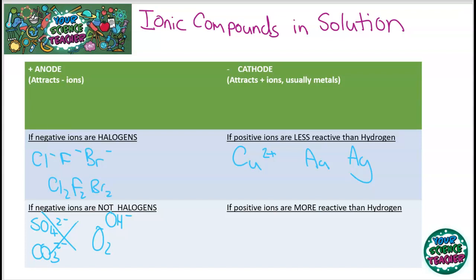However, if you look at some metals that are more reactive than hydrogen, for example potassium or sodium, they will not be formed if you put it in a solution. What will be formed is hydrogen gas, which comes from the H+ ions in solution. So you need to be really careful when looking at ionic compounds that are in solution. We're going to look at some examples now.